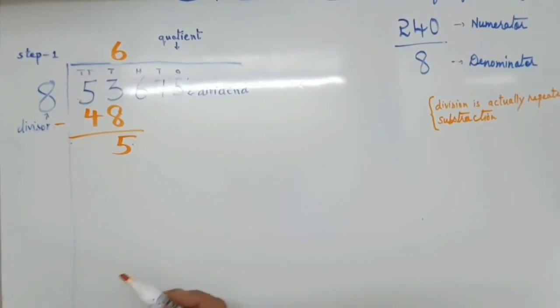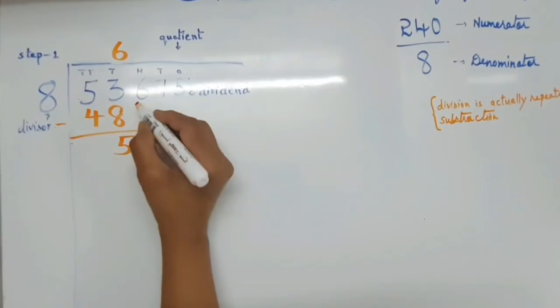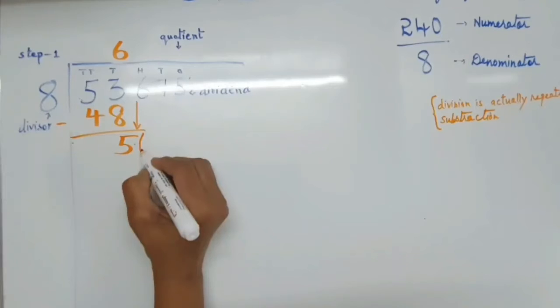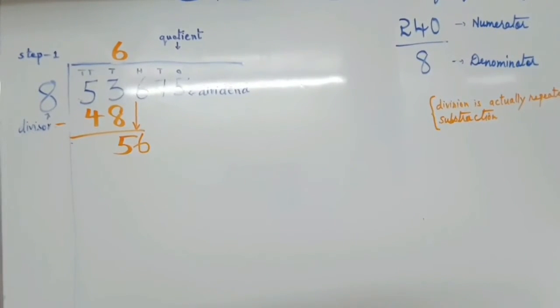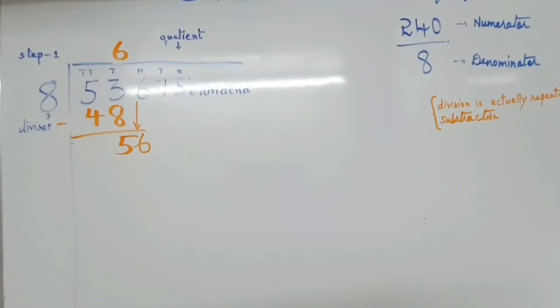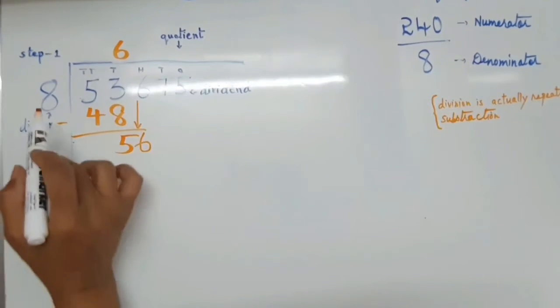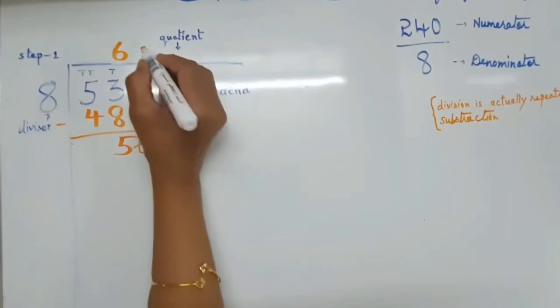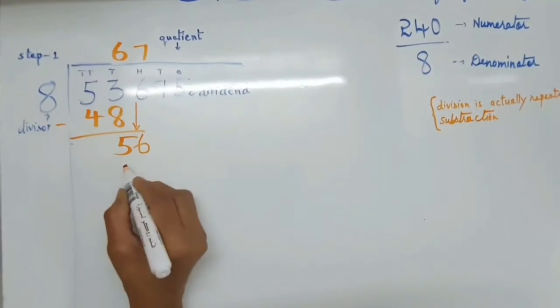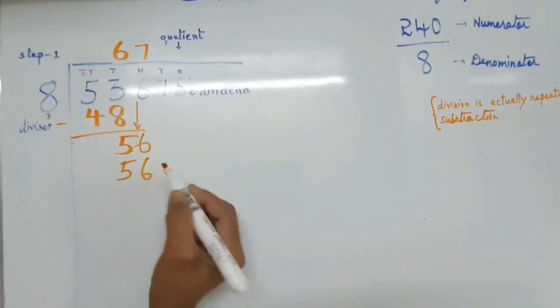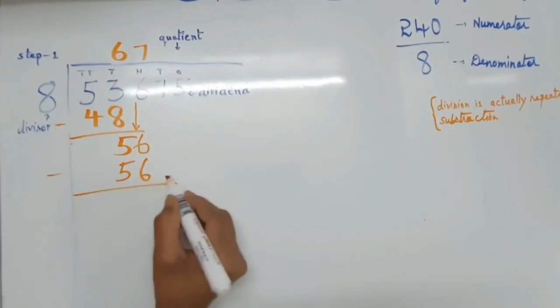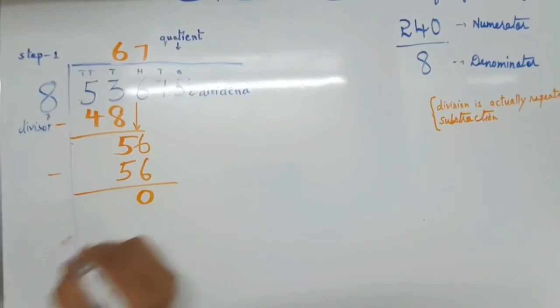Now we have to bring our next digit down. So it becomes 56. Again we have to ask how many 8's will make 56. Now we have to count 8 tables. 8 sevens are 56. Now again we have to subtract. So 56 minus 56, it becomes 0.